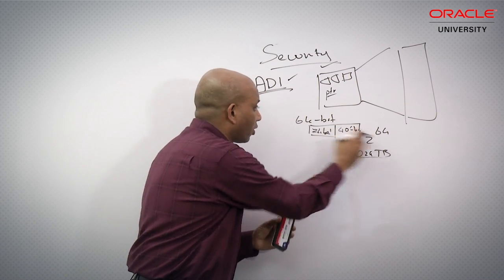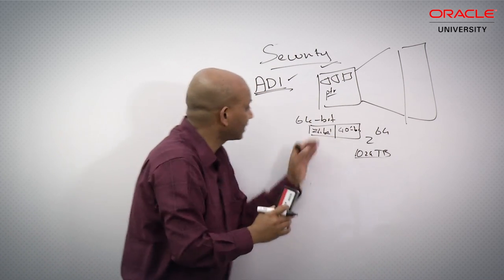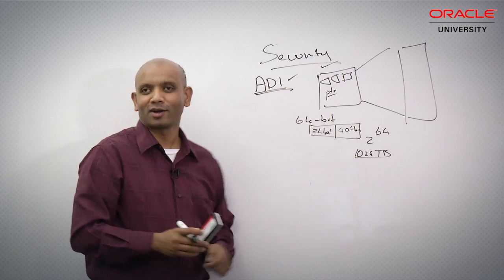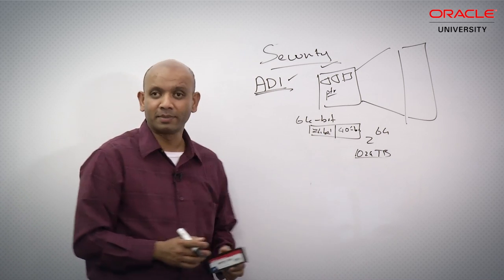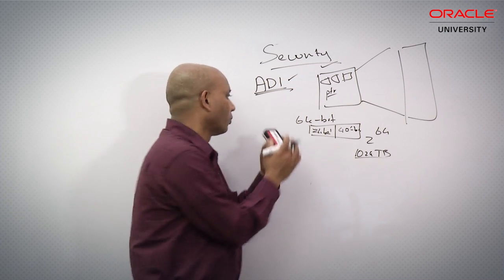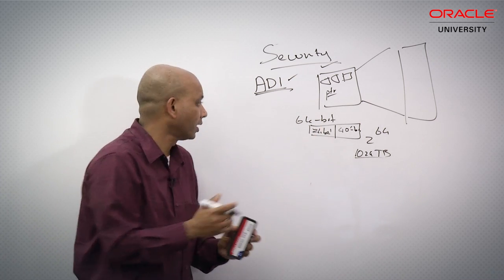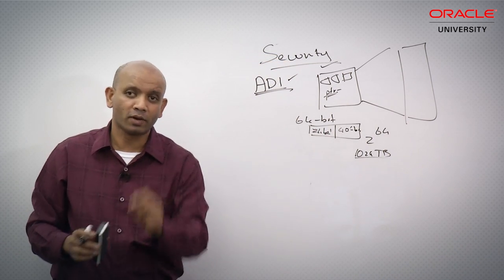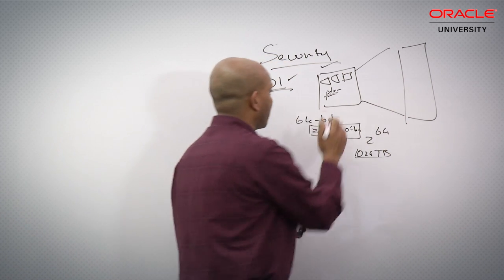Out of the 64 bits, 40 used for real memory, the rest basically sitting around doing nothing. We at Oracle said that's not a good thing. Can I use this for something else? Of course I can. We're going to use this to make sure the pointer is pointing to the right amount of memory.